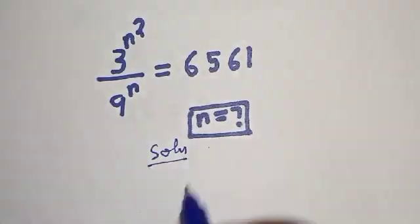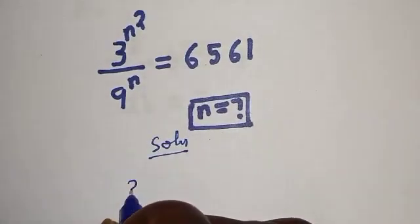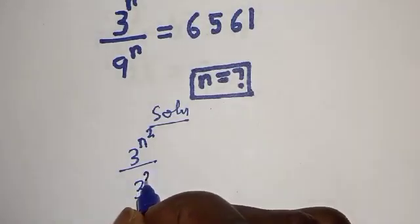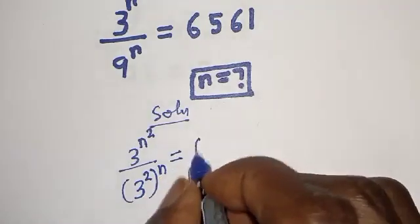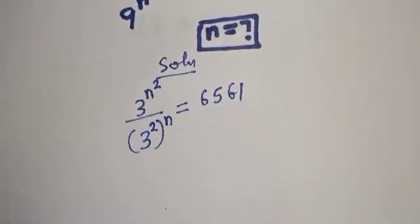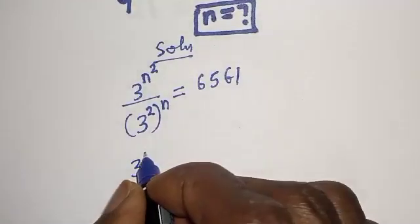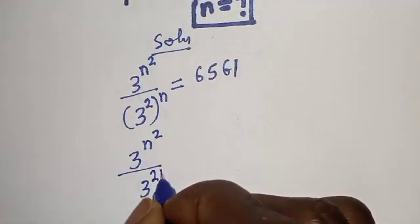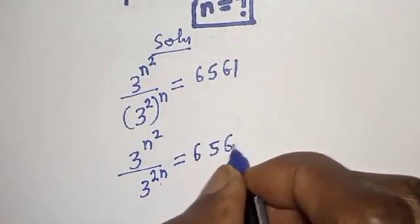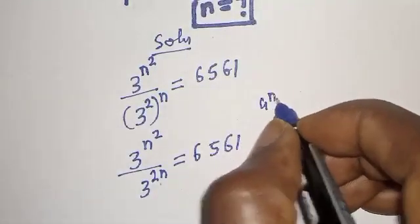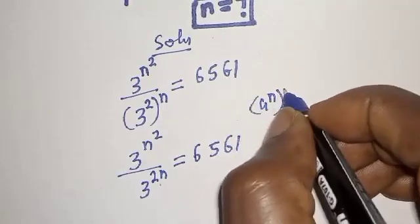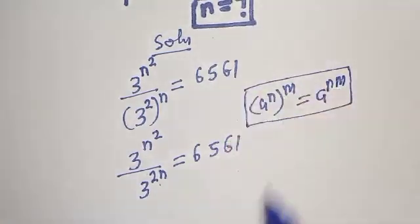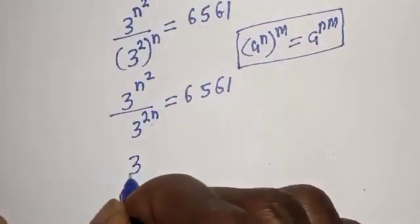Solution: we have 3 raised to power n squared, divided by 9 raised to power n. This can be rewritten since 9 equals 3 squared, so we have 3 raised to power n squared, over 3 squared raised to power n, which equals 6561. This uses the rule that a raised to power n, raised to power m, equals a raised to power n times m.